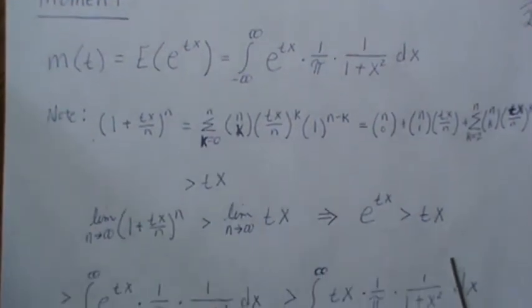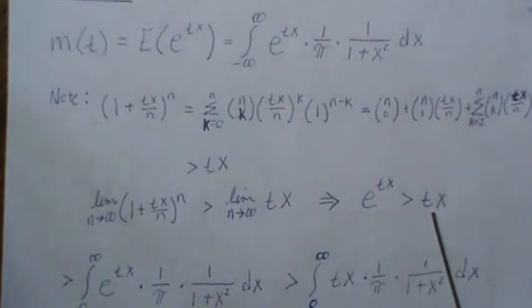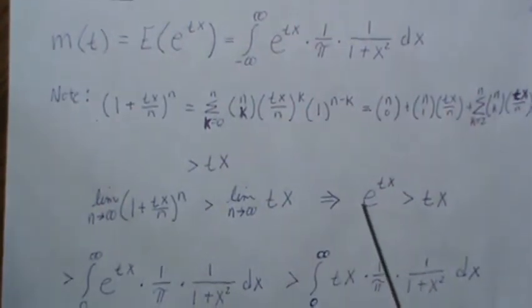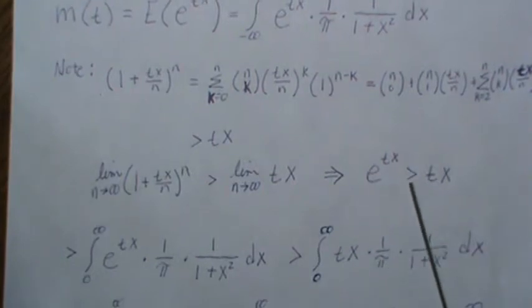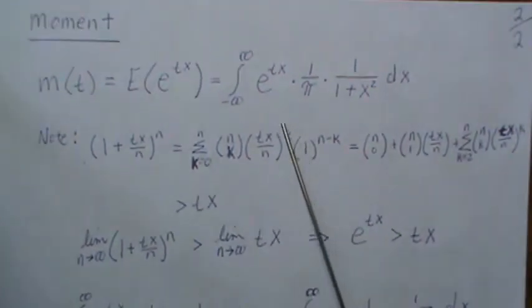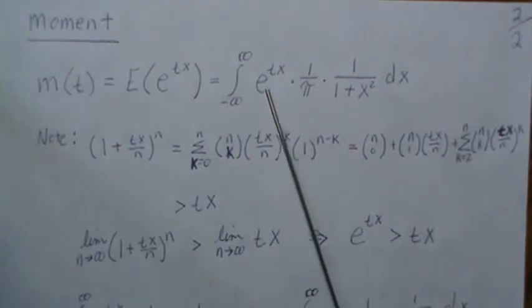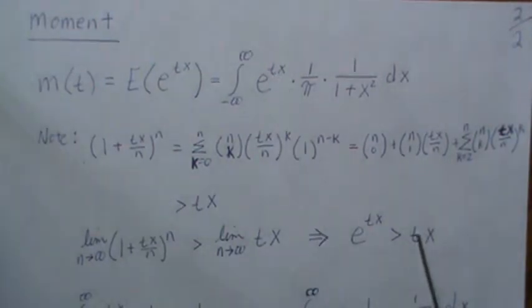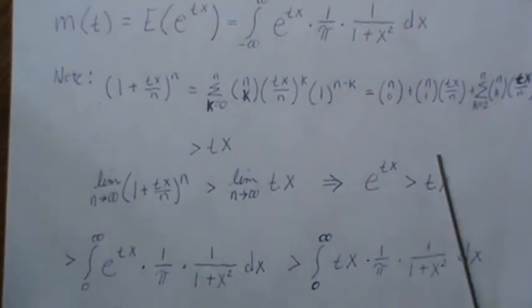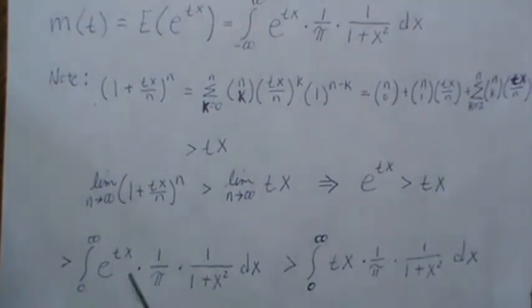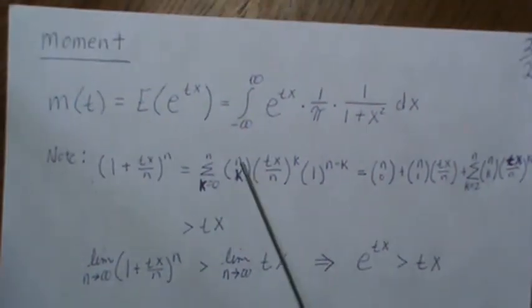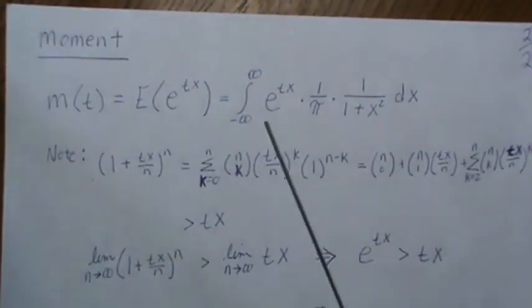So now let's go back to this piece here, and in place of e^(tx) we're going to just put in tx, and so this piece is less than that piece.